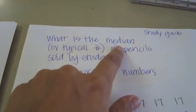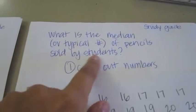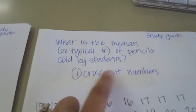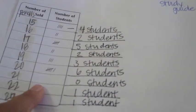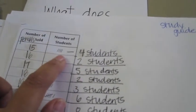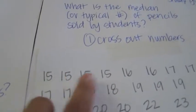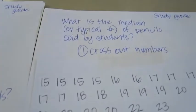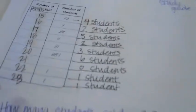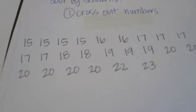The next question asks: what is the median or typical number of pencils sold by students? I'm going to show you the cross-out numbers method. Look at all the pencils sold and how many pencils each student sold. For example, 15 pencils were sold by 4 students, so I wrote 15, 15, 15, 15 — four times — to represent those 4 students. I did that for all the values.